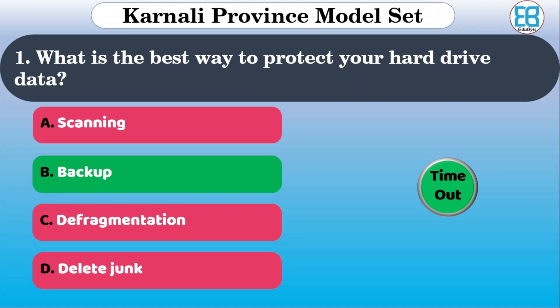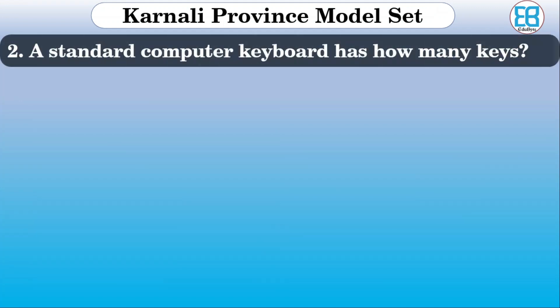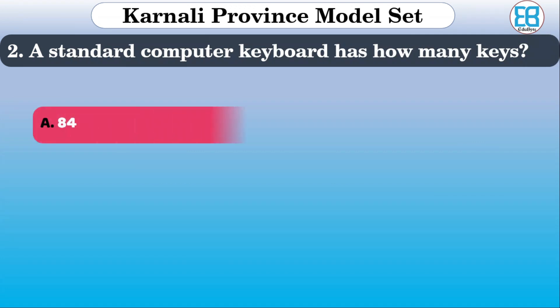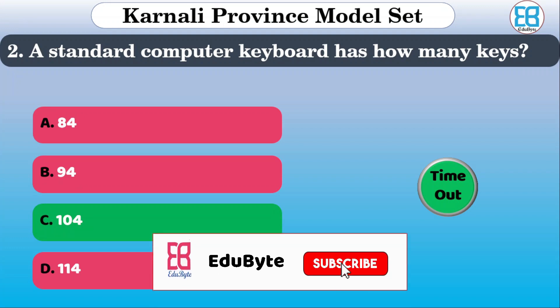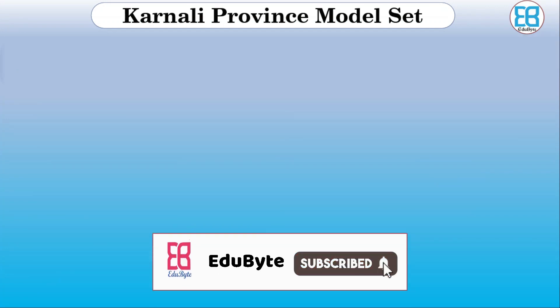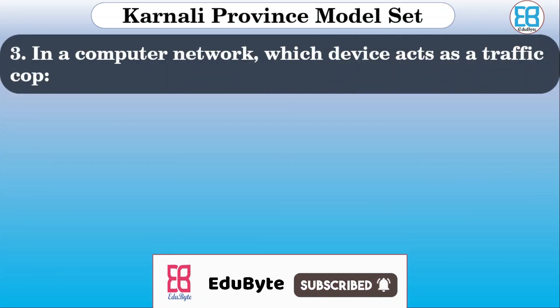A standard computer keyboard has how many keys? The options are 84, 94, 104, and 114. The correct option is 104.